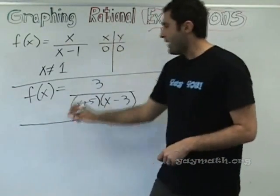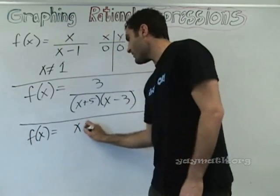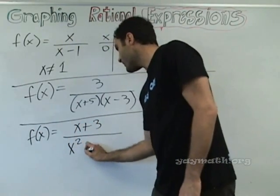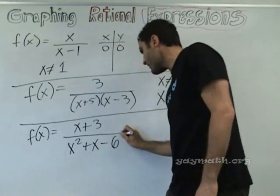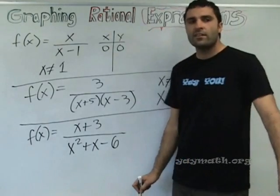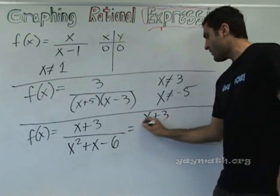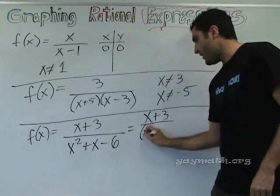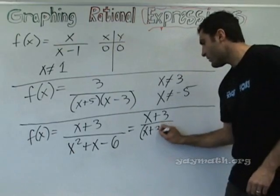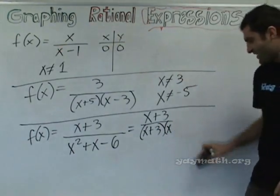And we have f of x equals x plus three over x squared plus x minus six. How do we figure out what the denominator can't be? We need to factor. Can you factor the bottom for us? X plus three, x minus two.